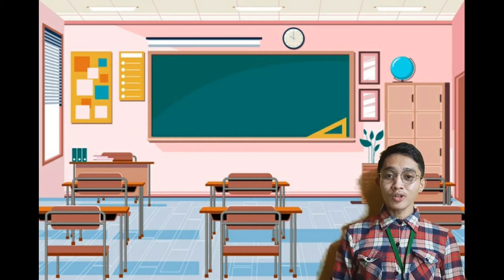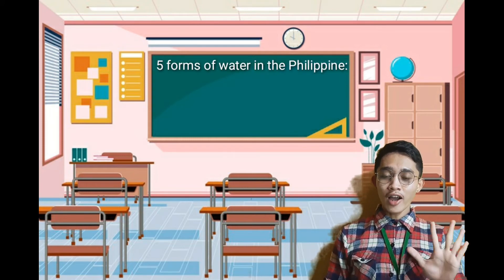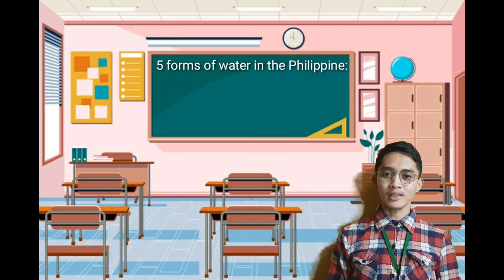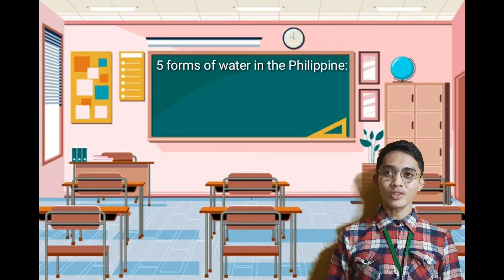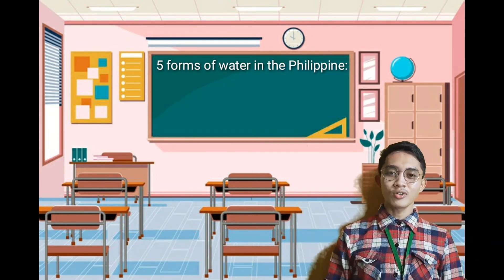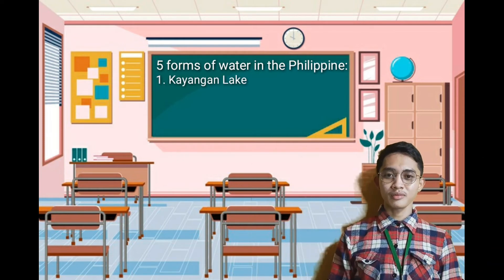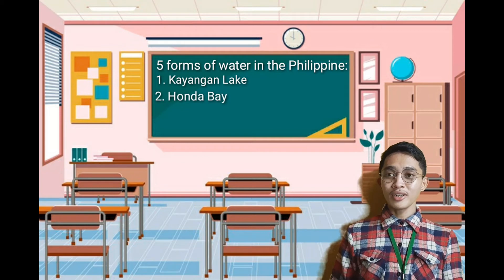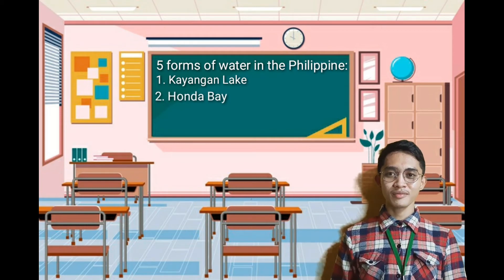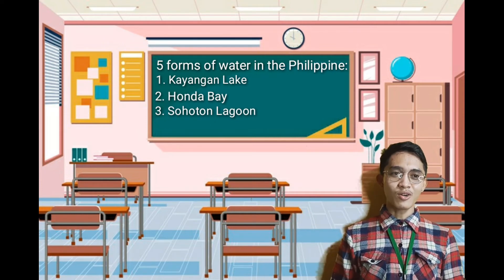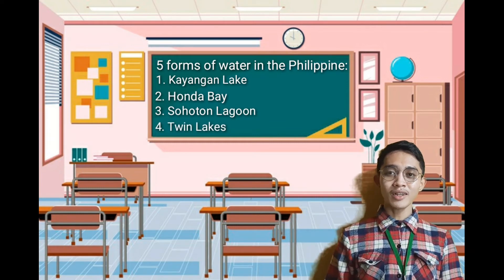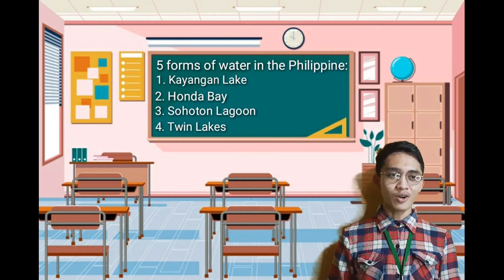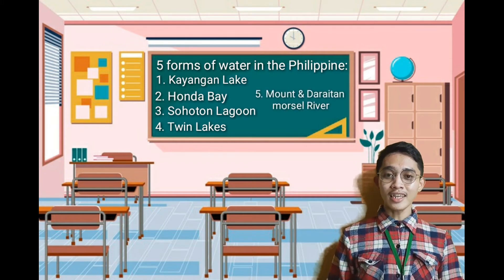Because we are done with our topic, can you give me at least five forms of water in the Philippines that I explained today? Anyone from the class? First is Kayangan Lake. Yes, that's correct. Number two — Punda Bay. Number three — Suhutong Lagoon. Number four — Twin Lakes. And the last one is Mount Daraitan and Marella River. Well done.